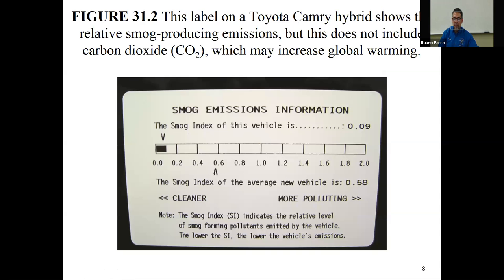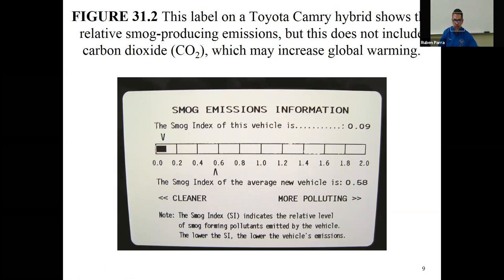This is a small information index on a hybrid vehicle. Notice that the hybrid vehicle produces less than 0.2 of the amount of smog — actually 0.09. The average vehicle is 0.58, so this is well below the threshold. It does not talk about carbon dioxide, though, which can produce global warming.